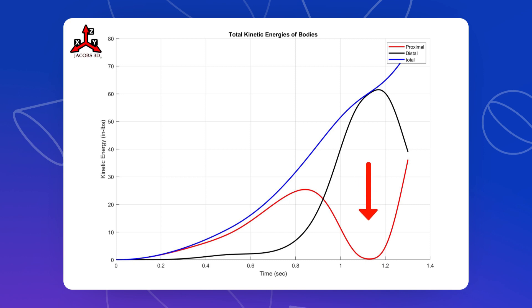To the point where the proximal link almost slowed down completely to the point of almost no energy. And the distal link had just as much as the total.